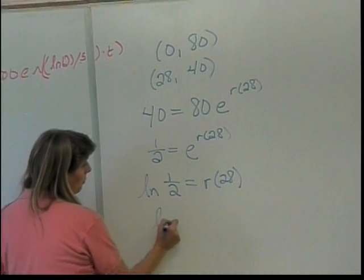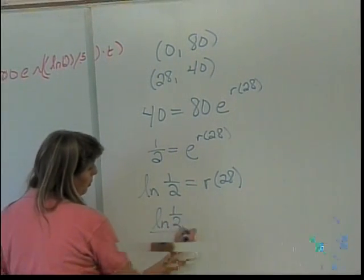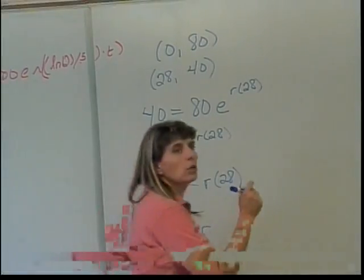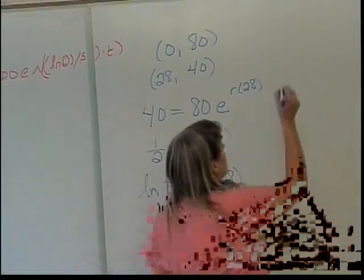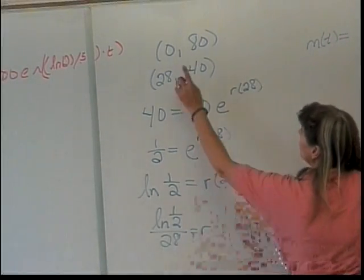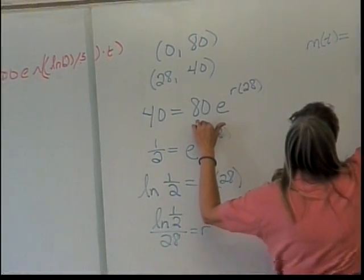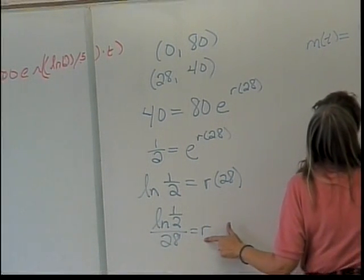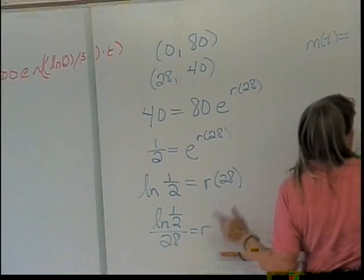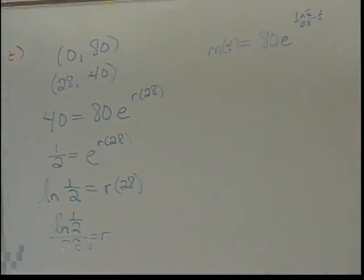And then finally, the last part for finding r is the natural log of one-half divided by 28 is going to give us r. That will give us our model. We were told it was m of t, right? m(t) is equal to 80 times e to the natural log of one-half over 28 times t. So there's our model.